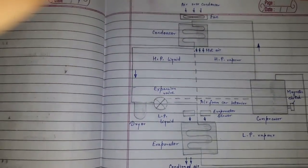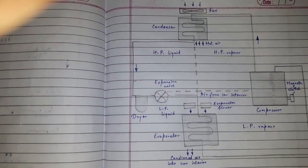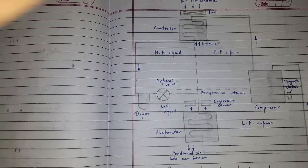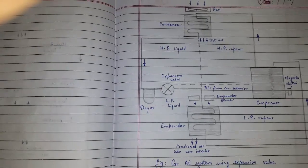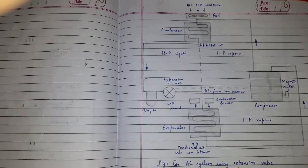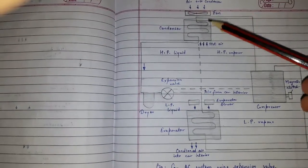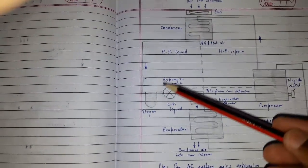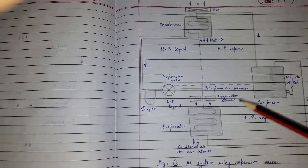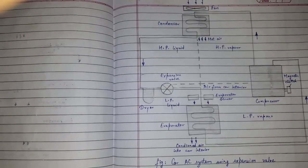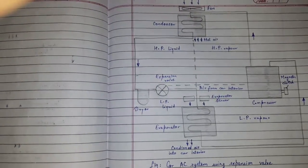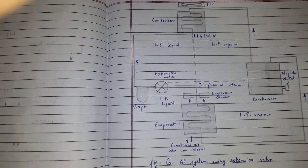This is the simplified diagram of the car air conditioning system using expansion valve. It has all the equipment shown in the earlier diagram but in a simplified version: fan, condenser, dryer, expansion valve, evaporator, and compressor. So it covers all the equipment in this simplified version of the diagram.